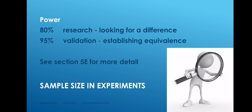In experiments — whether two-factor or any other size — we need to choose an appropriate sample size and number of replications. In chapter 5 we discuss sample size and power, and that applies to the testing of all null hypotheses including those in experiments. We use 80% power when doing research — looking for a difference — and 95% power when doing validation, where we wish to establish equivalence and prove that no difference exists. Section 5e of the textbook presents the sample size and power approach.